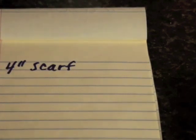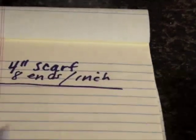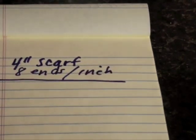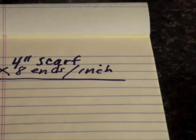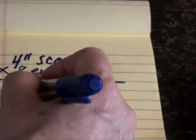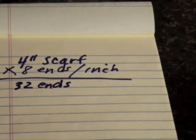So if I'm going to be making a 4-inch wide scarf and I know that there are 8 ends per inch, how many ends will there be for my total scarf? To figure that out, all you'll do is multiply 8 times 4 which gives you 32 ends. That's how many ends there will be in your scarf.